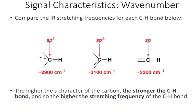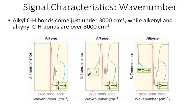C–H stretches tend to occur around 3,000 wave numbers, but there's a difference depending on the hybridization of the carbon. SP3 hybridized carbons tend to have C–H stretches just below 3,000 wave numbers, SP2 carbons are a little bit above 3,000, and SP hybridized carbons are higher still. So when we analyze the spectrum, we draw a line at about 3,000 wave numbers — peaks just below indicate SP3 C–H stretches, peaks around 3,100 indicate an alkene with an allylic hydrogen, and even higher peaks indicate a hydrogen attached to an SP hybridized carbon.